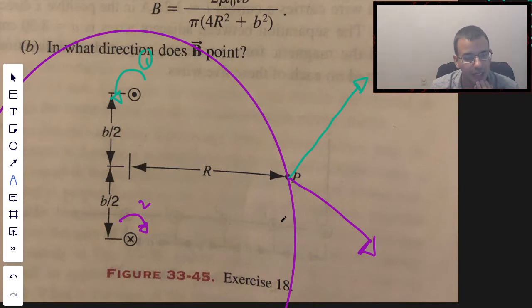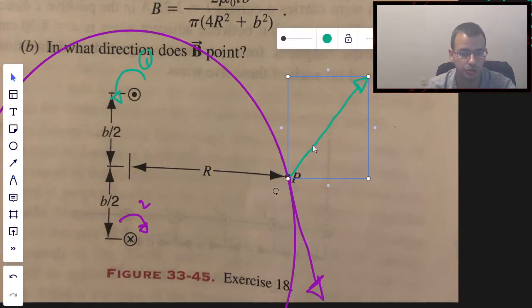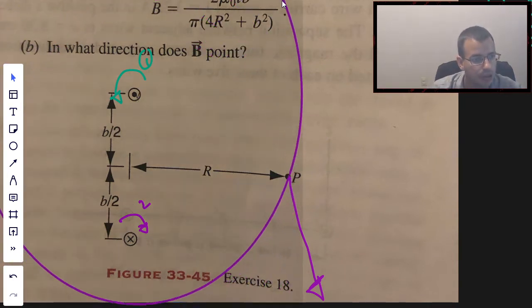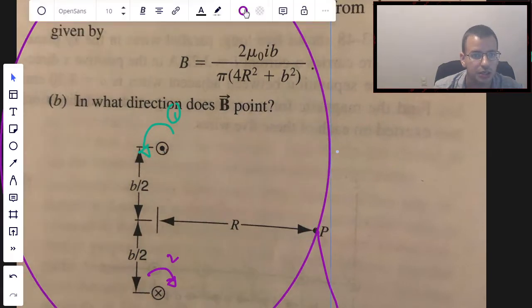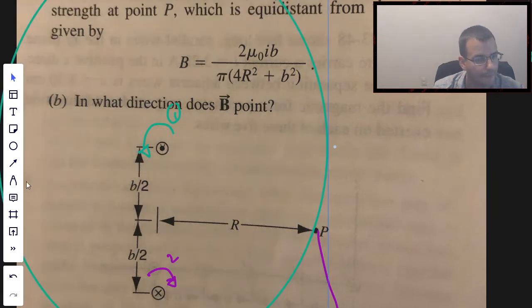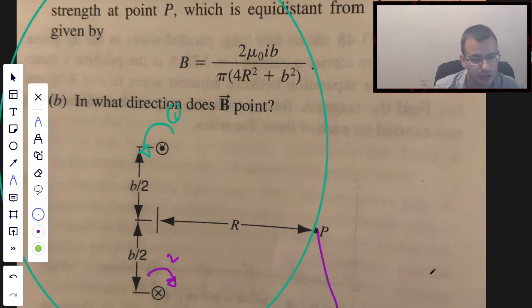The magnetic field for the bottom one, I'll change to purple to keep some level of consistency. This is going to create a magnetic field to the bottom right. Not drawn to scale because this should be perpendicular. I should probably draw it better so it's going to be like this for the bottom one because it's going to be tangent to the circle.